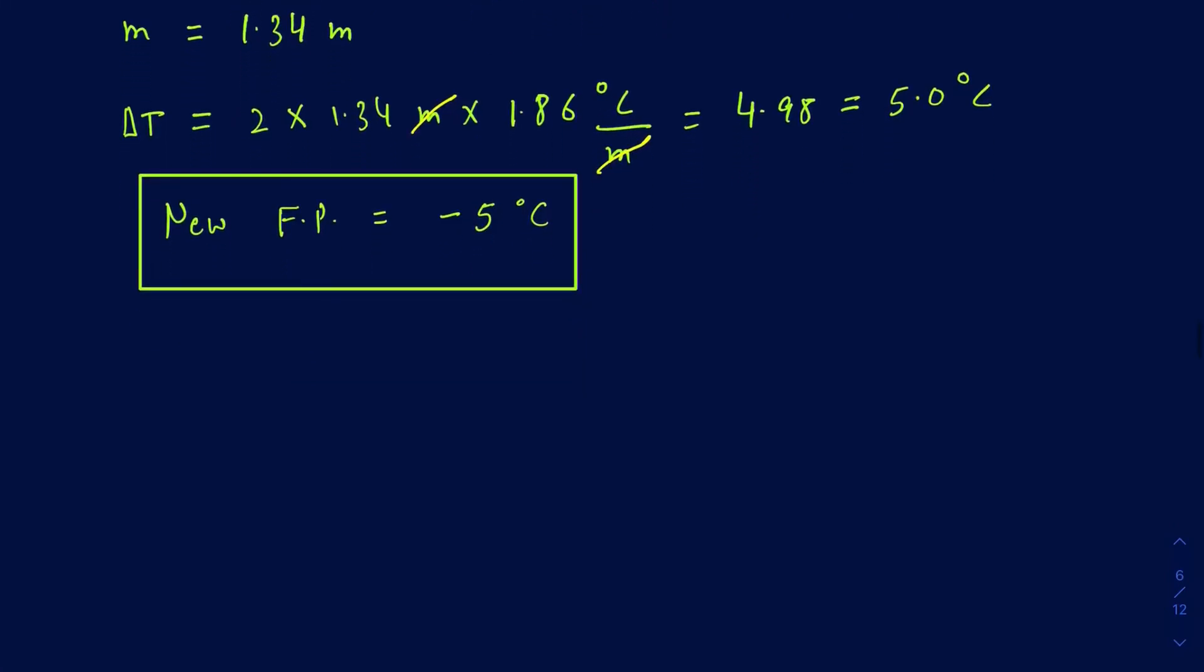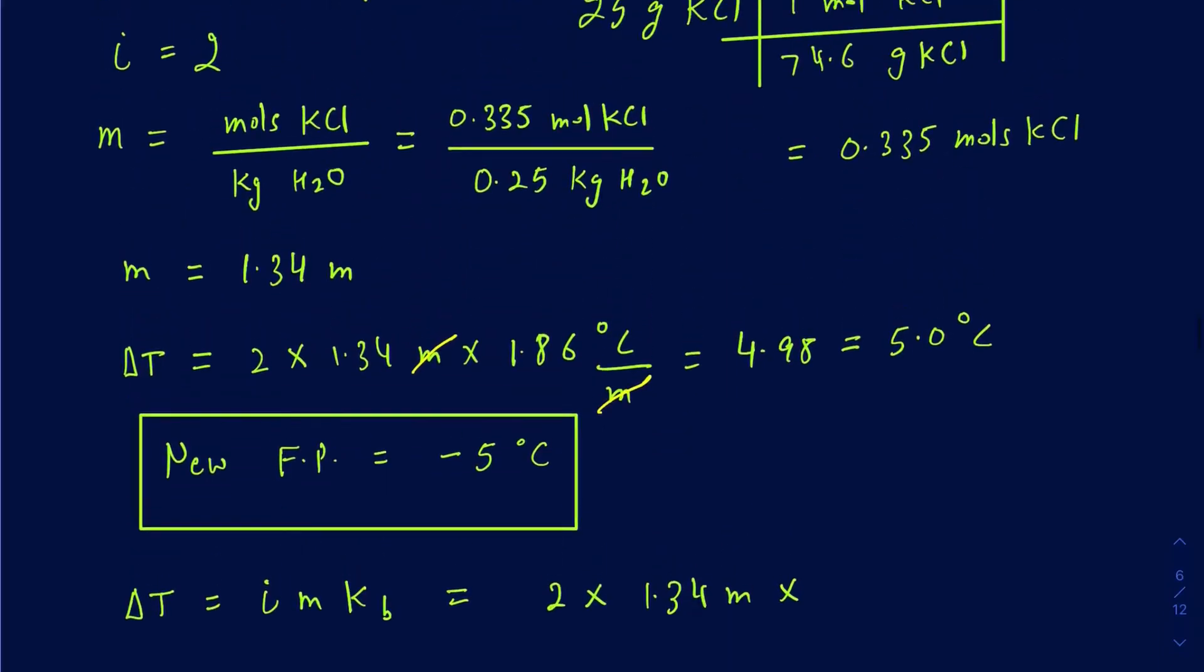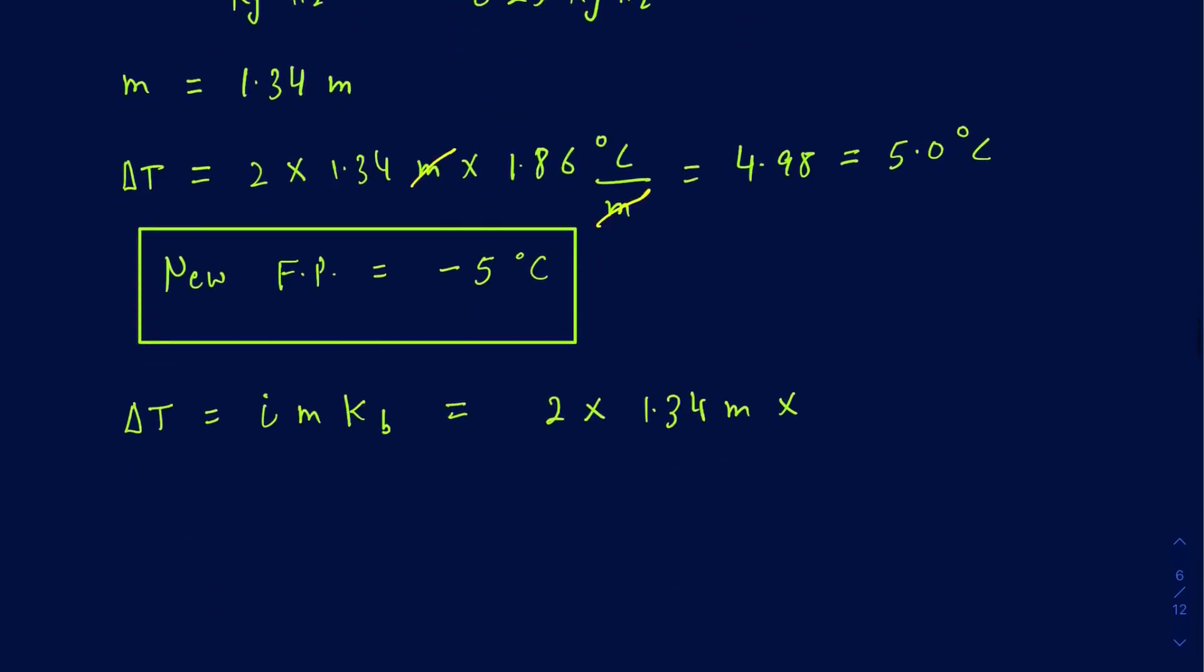Now, similarly, if I want to calculate the boiling point, the formula is going to be i m Kb, and we have pretty much everything, so it's probably going to be a good idea if you can pause the session and figure out what that delta T is going to be here. So your i still stays at 2, your m is still going to be 1.34 molality, and then your Kb for water is 0.512 degrees Celsius over mol. So then your delta T in this particular case is 1.37 degrees Celsius because your mol will cancel out here.